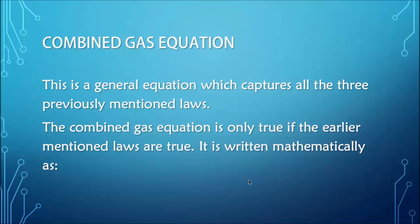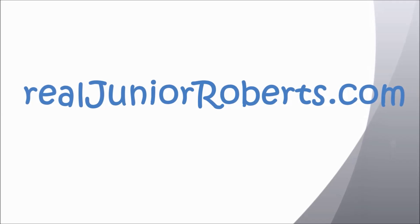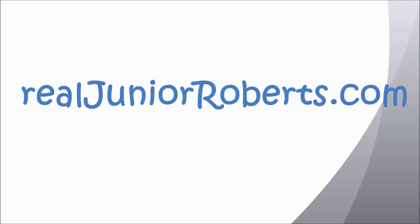Now we'll look at the combined gas equation, which puts together the previous three laws. The combined gas equation is a general equation that captures all three laws, and is only true if those earlier gas laws are true. It is written mathematically as P1V1 over T1 equals P2V2 over T2. This is something you'll want on your formula sheet along with the previously mentioned equations. You can find more great physics tutorials like these over on my website at realjohnroberts.com.